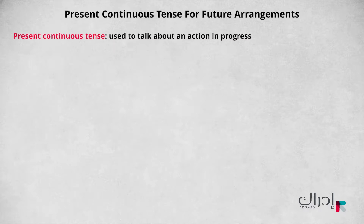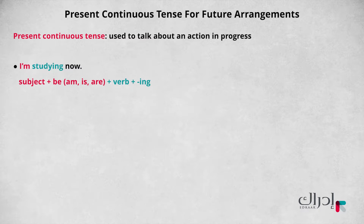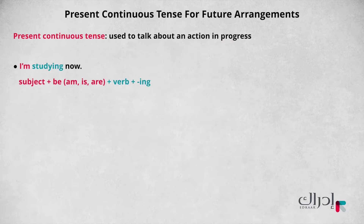The main use of the present continuous tense is to talk about an action in progress. Look at this example: I'm studying now. The action of studying is happening now in the present, and it will continue into the future. We use the present continuous tense — subject, followed by the verb 'to be' in the present tense (am, is, are), followed by the verb plus -ing — to talk about now.